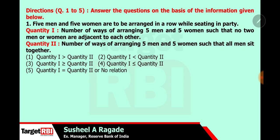First we will try to understand what is the question and then we will solve step by step. What is given? 5 men and 5 women are to be arranged in a row while seating in a party. The first quantity is the number of ways of arranging 5 men and 5 women such that no 2 men or women are adjacent to each other.